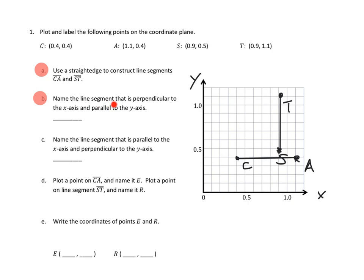Now let's go to 1B: name the line segment that is perpendicular to the x-axis and parallel to the y-axis. Perpendicular means it would run into the x-axis at a right angle, and I think that's line segment ST. If we imagine this line segment coming down and hitting the x-axis, it would hit it at a right angle. That same line segment is also parallel to the y-axis, so the answer is line segment ST — and I'll write that with the little line across the top to indicate it's a line segment.